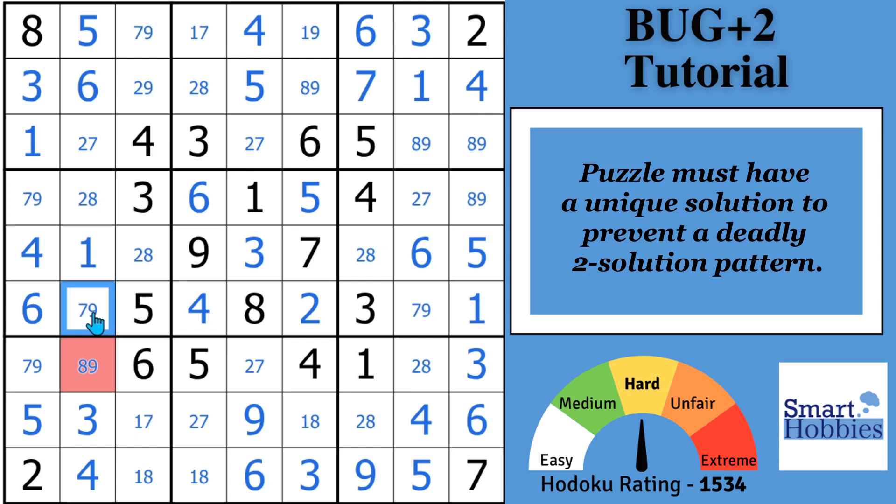And so you have two solutions to the puzzle, and that is a deadly trap. So we avoid the deadly trap by being able to solve for the digit, in this case a seven, that will break that deadly pattern and give you one unique solution. So you do need to know that the puzzle has a unique solution.